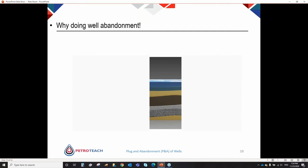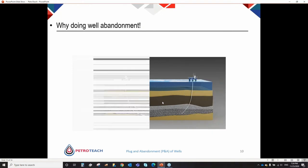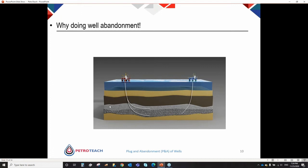Imagine this is your reservoir and the caprock above it. What we did was penetrate the caprock with a bit and start to produce. What we are supposed to do is just restore the caprock — plug and abandonment means restoring the caprock's functionality, which means finding another competent formation and establishing a cross-sectional barrier. P&A means deconstructing the well: whatever you did to construct your well, do it in reverse. We restore the caprock or its functionality.